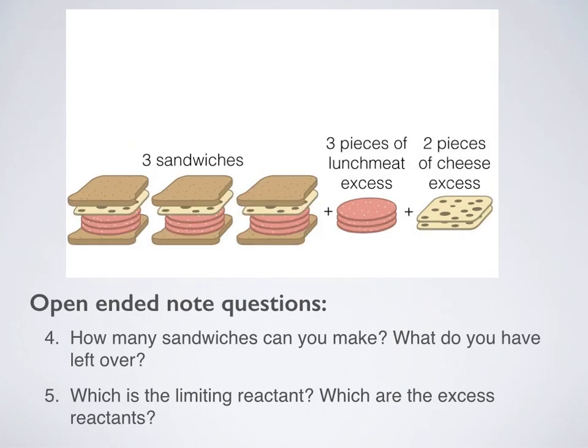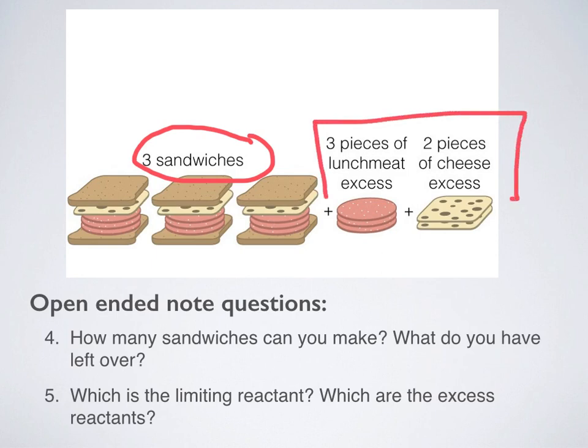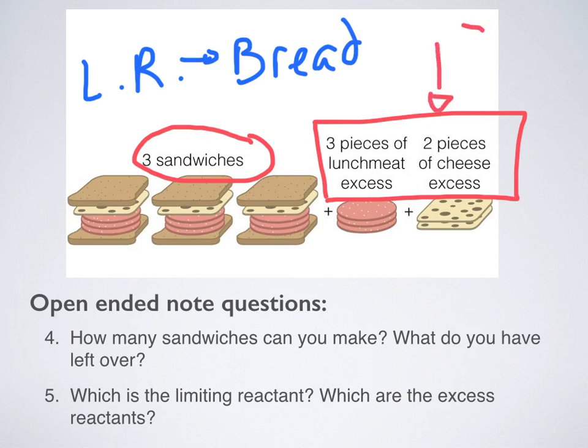The answer, I can make three sandwiches. What would I have leftover? I would have three pieces of meat and two slices of cheese. So what was my limiting reactant? My limiting reactant was the bread. I ran out of bread first. What were my excess reactants? These were my excess reactants. I had three extra pieces of lunch meat and two extra pieces of cheese.